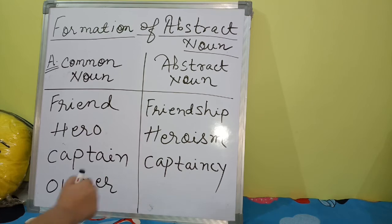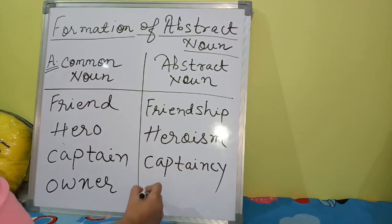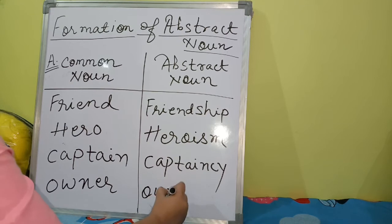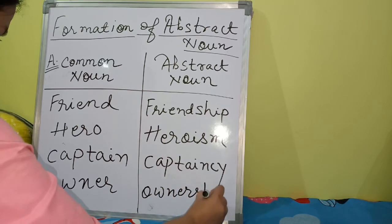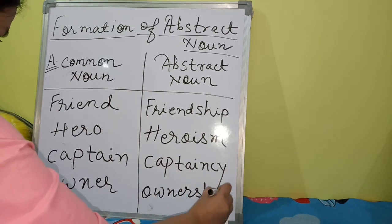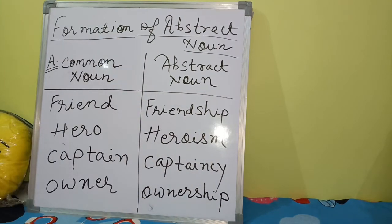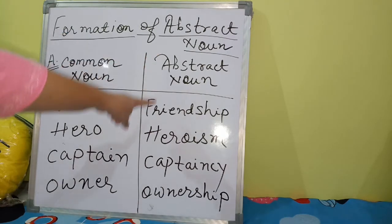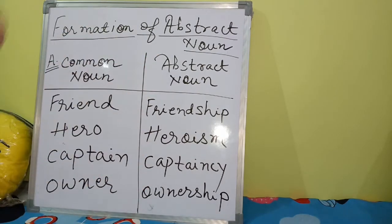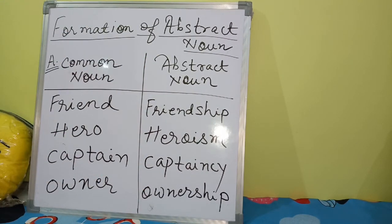From 'owner,' the abstract noun formed is 'ownership.' So these are examples of common nouns from which we have made abstract nouns.